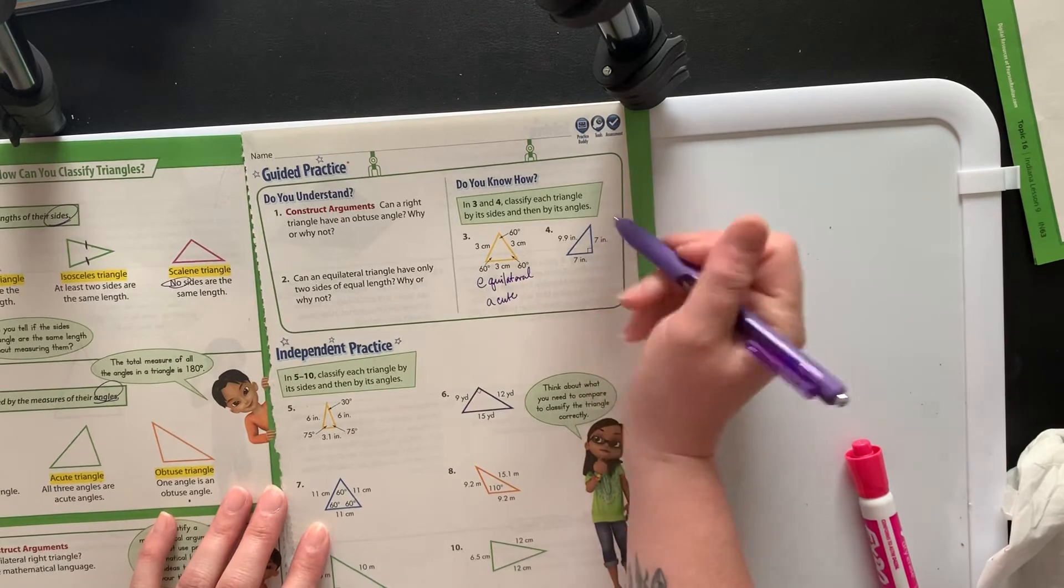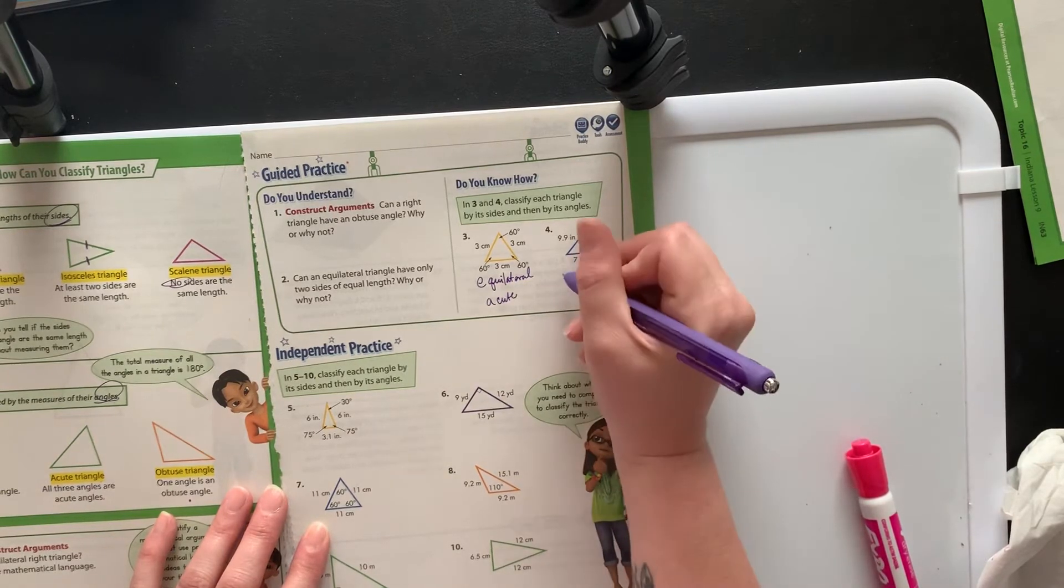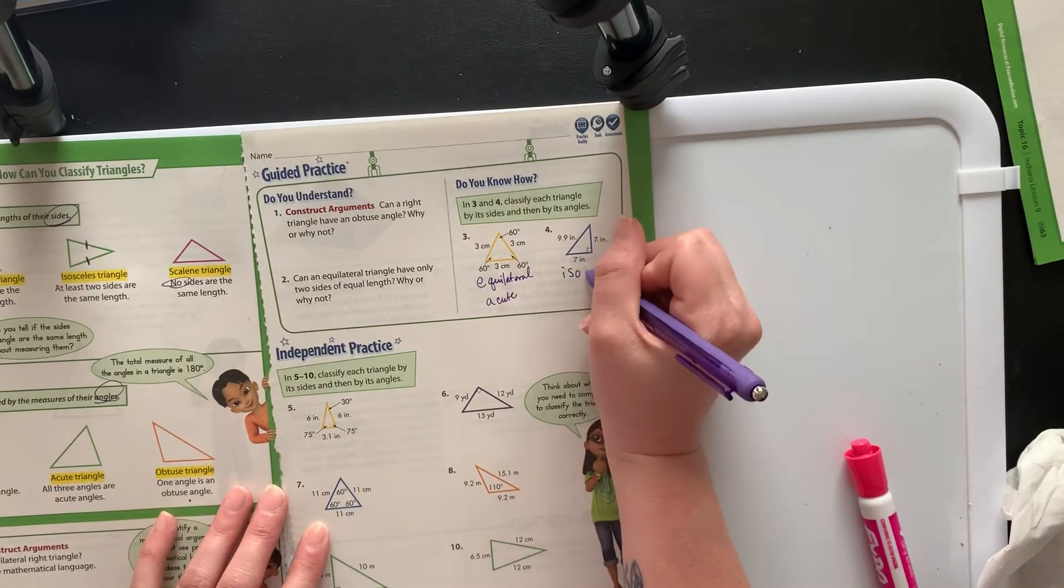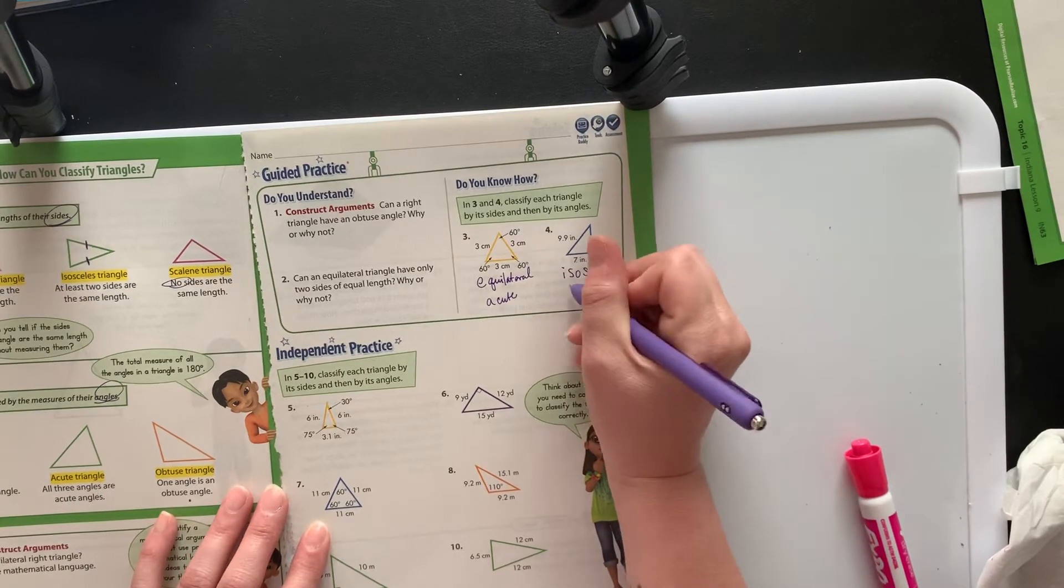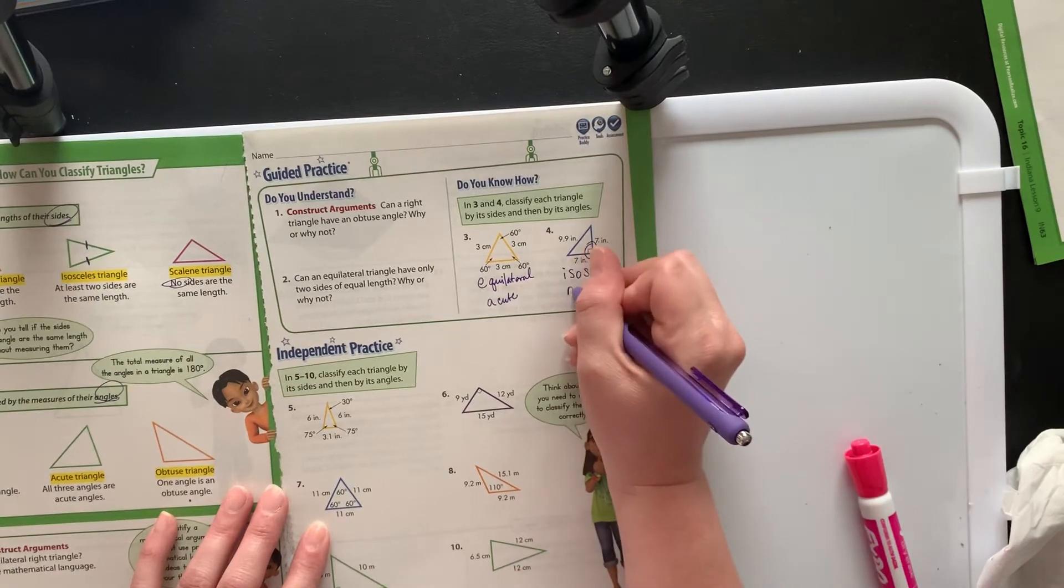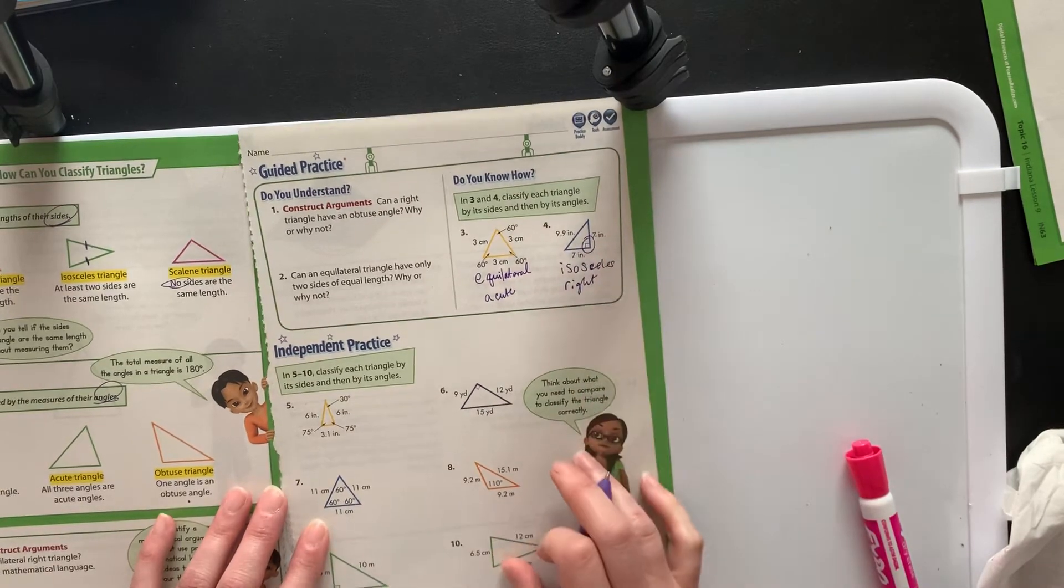This one looks like we have a 7 and a 7, so that's going to make it isosceles. Isosceles is a hard word to spell. And then I see this angle here, which means it has to be a right triangle.